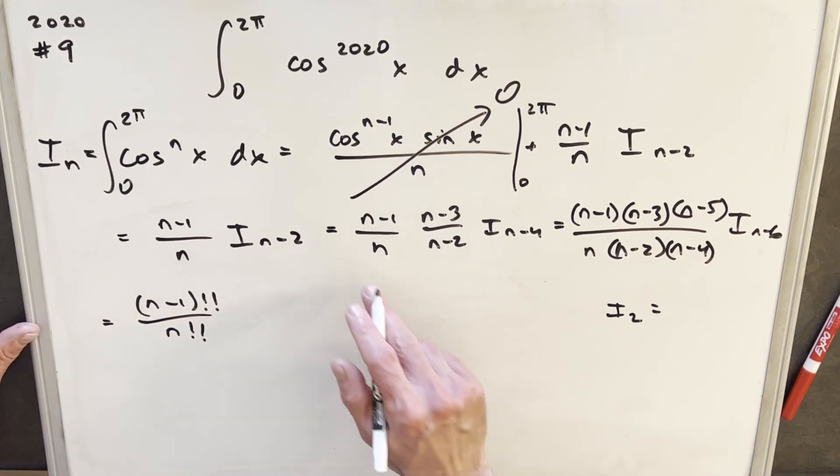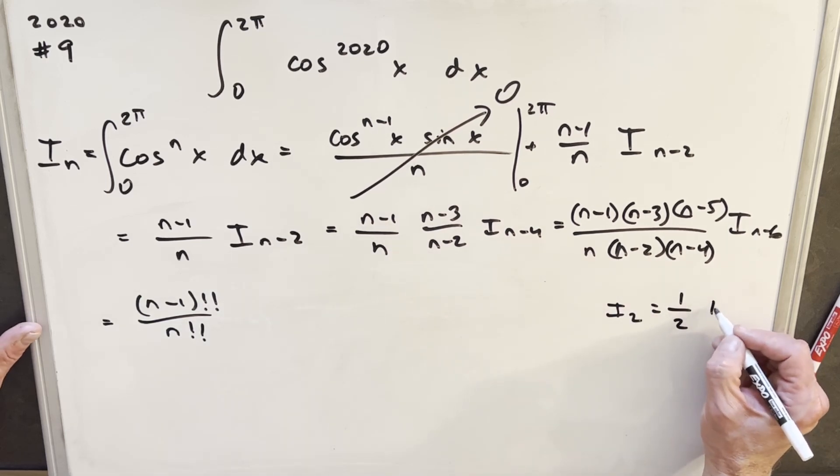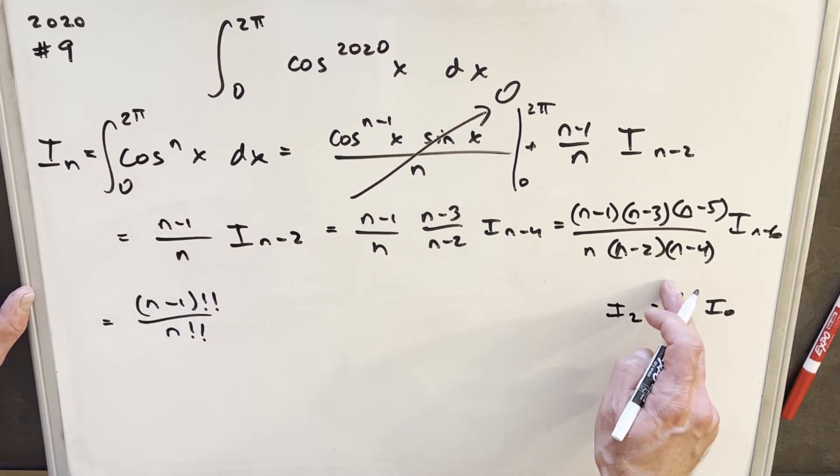Okay, now if you do i sub 2 using this formula, 2 minus 1 is going to be 1 over 2 i sub 0. In an odd double factorial, our last term is going to be 1.